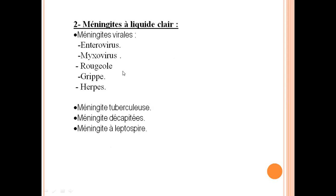Les méningites à liquide clair sont généralement virales. Plusieurs virus peuvent causer des méningites, comme les entérovirus, myxovirus, rougeole, grippe, herpès. Ce sont les virus qui causent généralement des infections ORL ou respiratoires. Il y a les exceptions : les méningites tuberculeuses, où l'agent de la tuberculose est une bactérie mais cause des méningites à liquide clair. Il y a aussi les méningites à leptospires et les méningites décapitées, c'est-à-dire avec prélèvement fait après traitement antibiotique, où on ne trouve plus le germe.